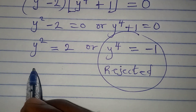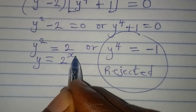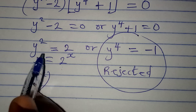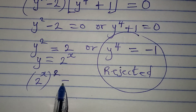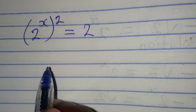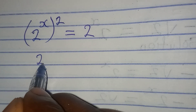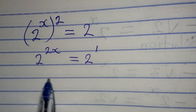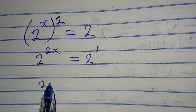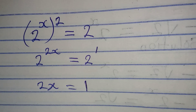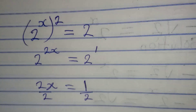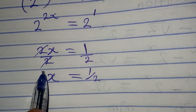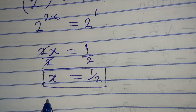We work with y squared equals 2. Remember y equals 2 to the power of x, so in place of y I write 2 to the power of x, and the square on y comes out as the square on that expression, giving 2 to the power of 2x equals 2 to the power of 1. Since the bases are the same, we equate the powers: 2x equals 1. Dividing both sides by 2, x equals one half.